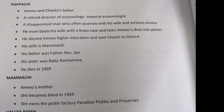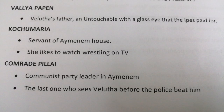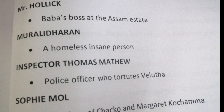Next character: Mamachi — Ammu's mother. She becomes blind in 1969 and she owns the pickle factory, Paradise Pickles and Preserves. Minor character Valyapapan is Velutha's father, an untouchable with a glass eye. Kochu Maria is a minor character, servant of Aymanam House who likes to watch wrestling on TV. Next minor character: Comrade Pillai, Communist Party leader in Aymanam, and the last one who sees Velutha before the police meet him. His son's name is Lenin. Other minor characters include Mr. Horlick, Baba's boss at the Assam estate; Murali Dharan, a homeless insane person; and Inspector Thomas Matthew, the police officer who tortures Velutha.